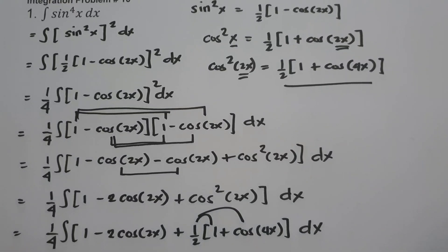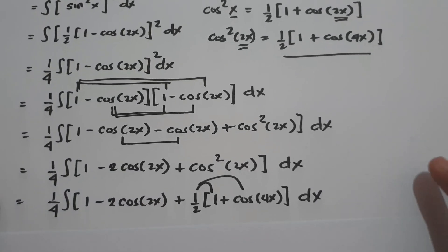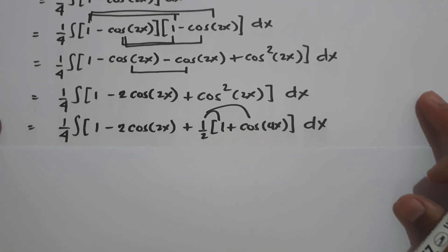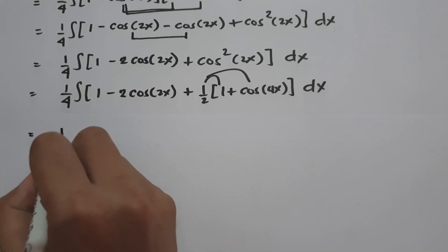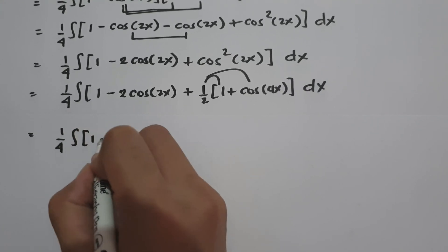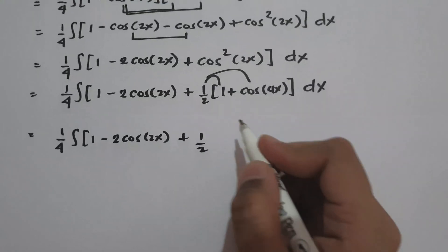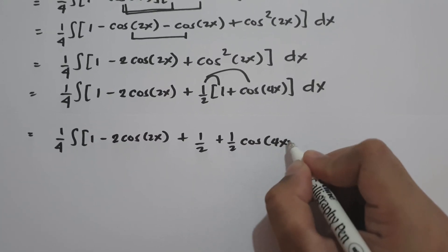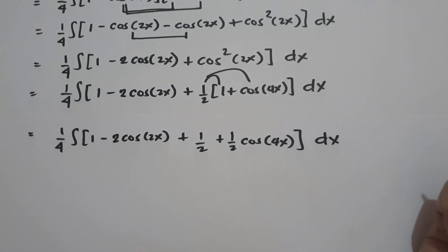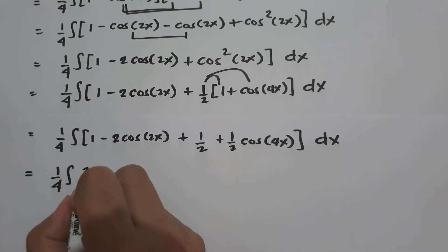Let us distribute this. Using another sheet of paper: one fourth times the antiderivative of 1 minus 2 cosine 2x, then one half times 1 is one half, and one half times cosine 4x is one half cosine 4x. Combining like terms: one fourth times the antiderivative of 3 over 2 minus 2 cosine 2x plus one half cosine 4x dx.